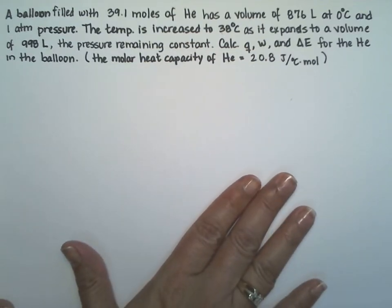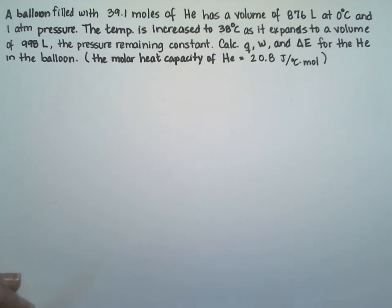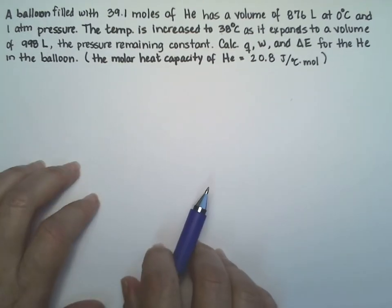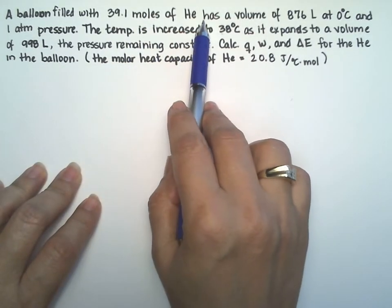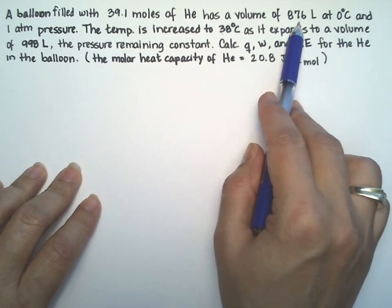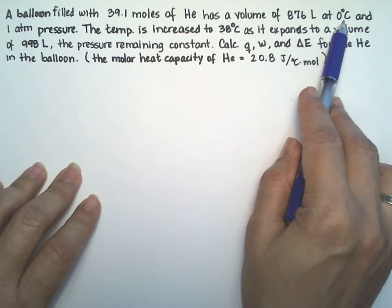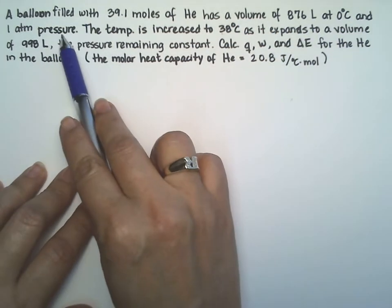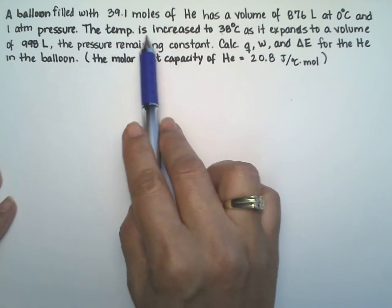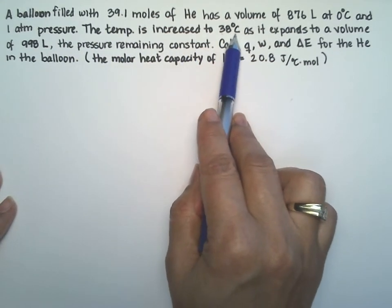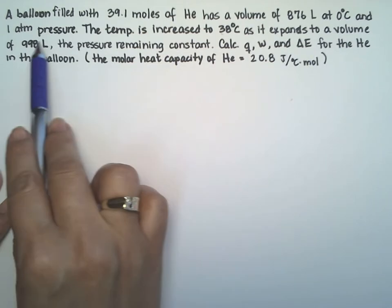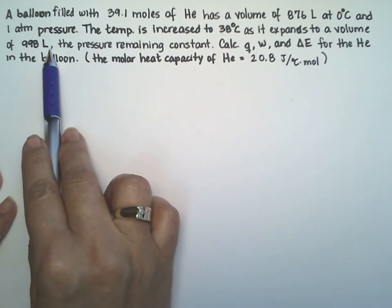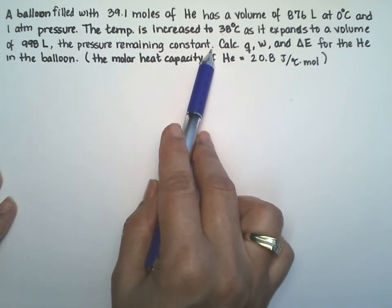This problem is long so we're going to have to pay attention here. A balloon filled with 39.1 moles of helium has a volume of 876 liters at 0 degrees Celsius and 1 atm of pressure. The temperature is increased to 38 degrees as it expands to a volume of 998 liters, the pressure remaining constant.